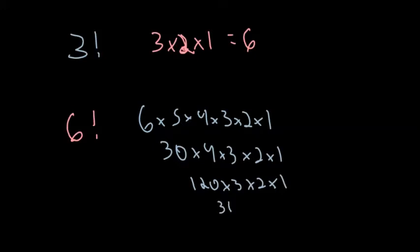120 times three would be 360 times two times one. 360 times two would be 720 times one, which would be 720. So six factorial would be 720.